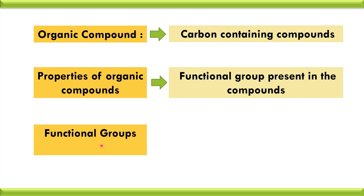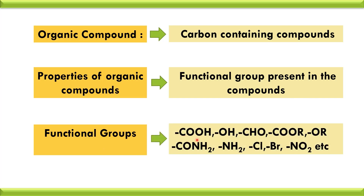There are different types of functional groups such as COOH group (carboxylic acid group), OH group, CHO group, COOR (that is ester group), OR, amide group, amino group, chlorine, bromine, nitro group, etc. Depending upon the functional group present in the compound, the type of the organic compound is determined.